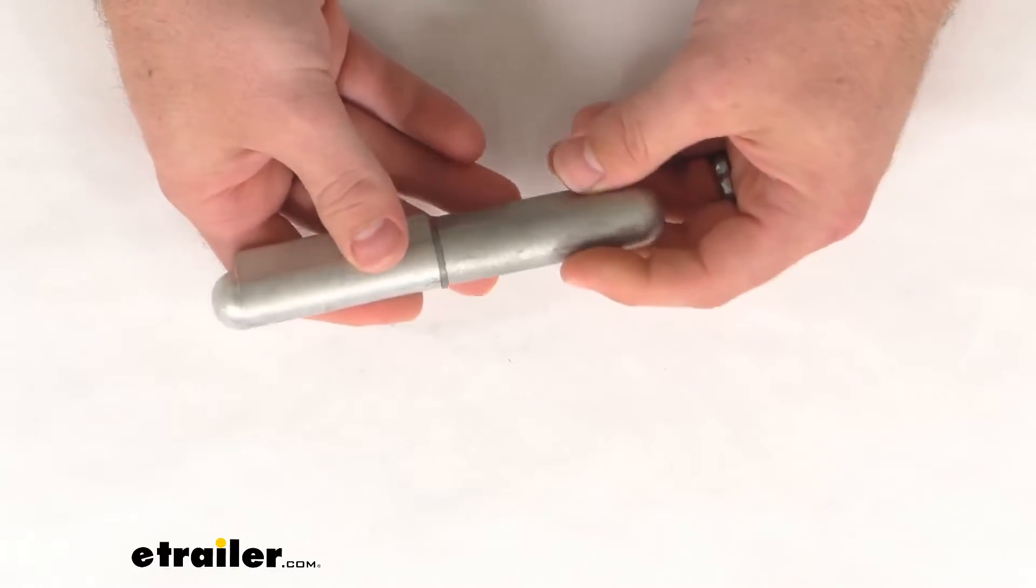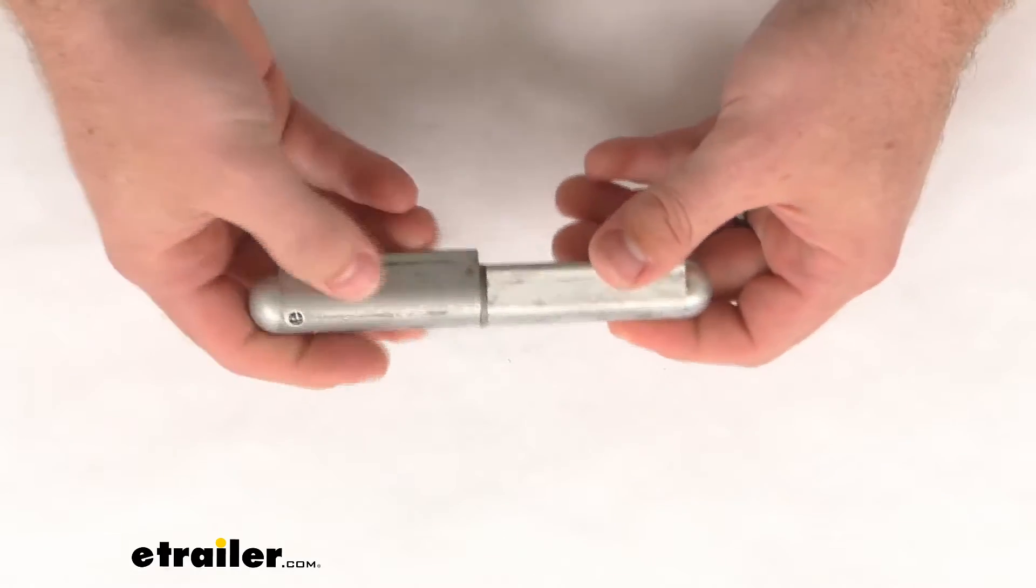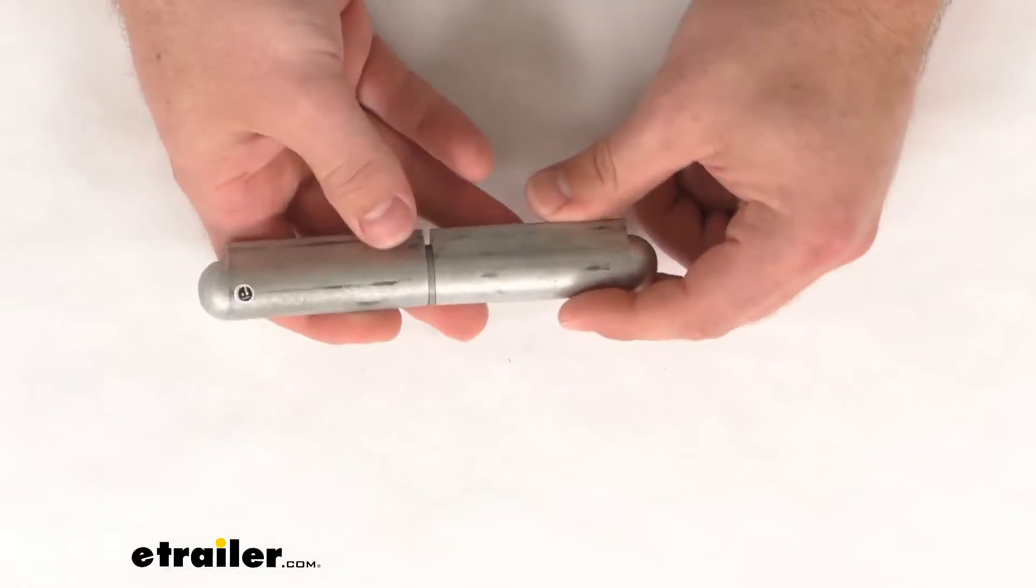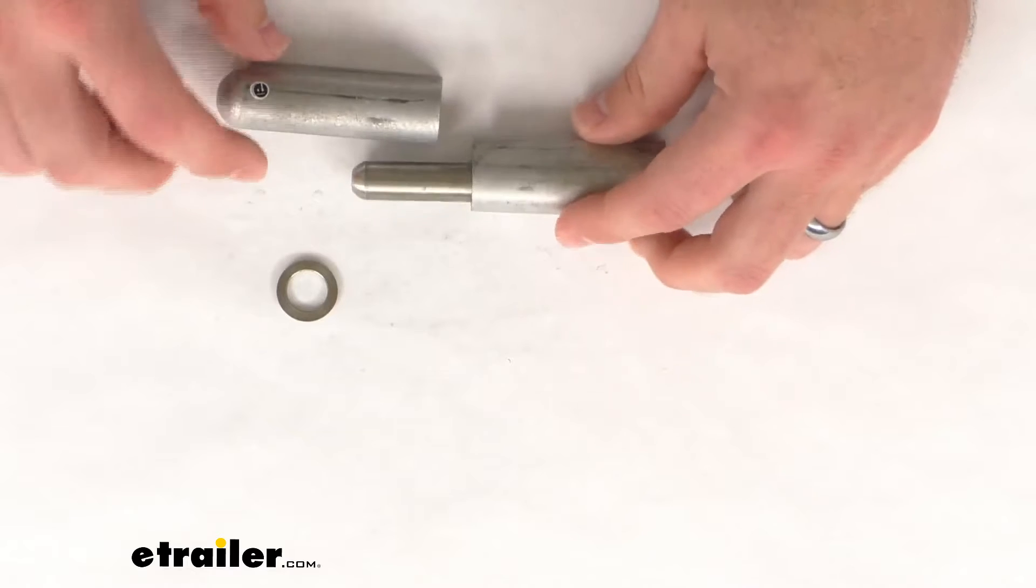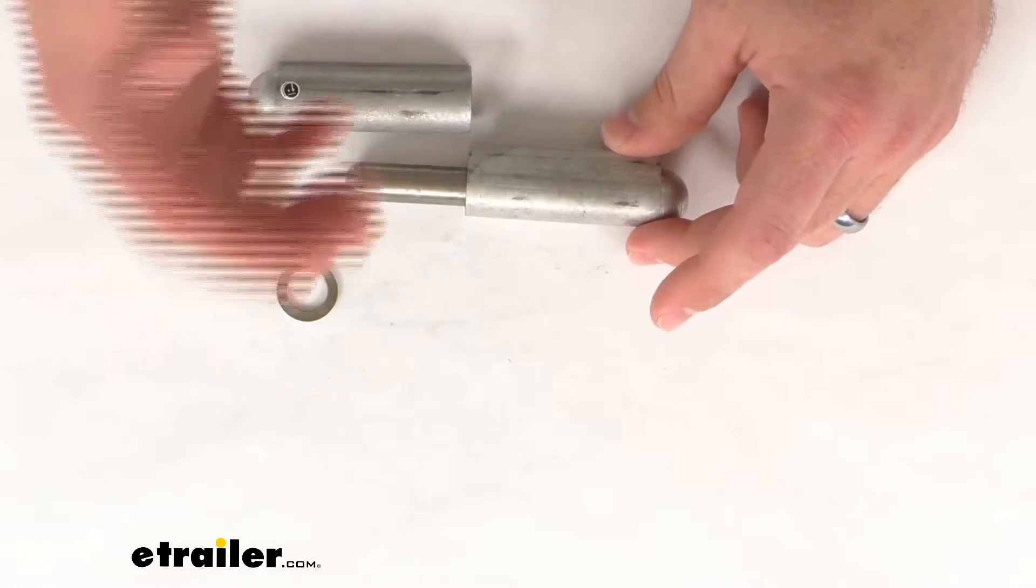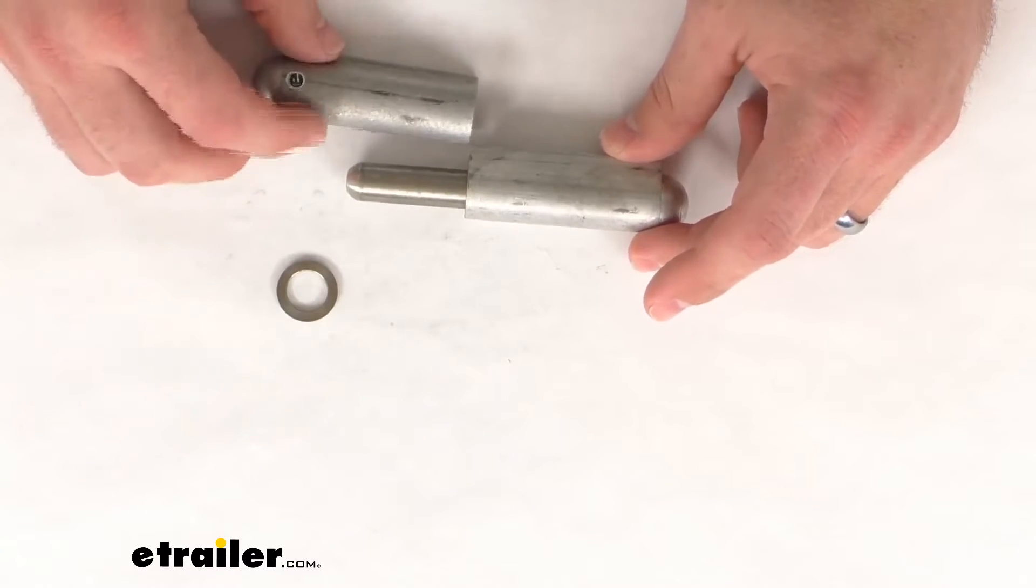And being welded on, it is going to ensure a nice strong hold for a heavy-duty and permanent application. Our two ends here are made of an aluminum construction, so they are going to be very rust and corrosion-resistant.